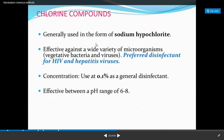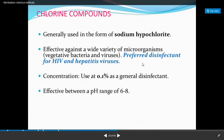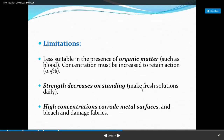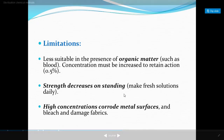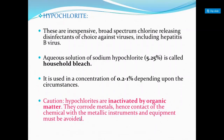Chlorine compounds are generally used in the form of sodium hypochlorite. They are effective against a wide variety of microorganisms including vegetative bacteria, viruses, and are preferred disinfectants for HIV and hepatitis viruses. Concentration used: 0.1% as a general disinfectant, effective at pH 6–8. Limitations: less suitable in the presence of organic matter such as blood, strength decreases on standing so fresh solutions must be made daily, and high concentrations corrode metal surfaces and bleach fabrics.